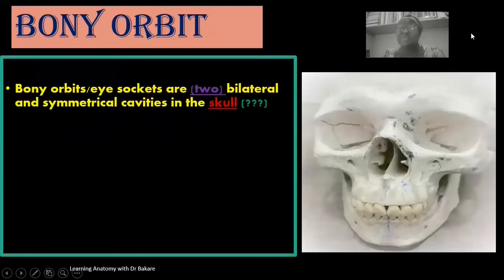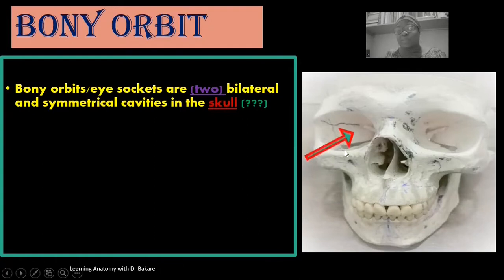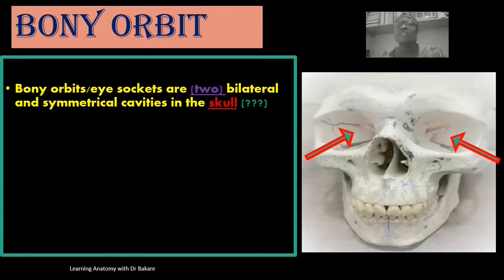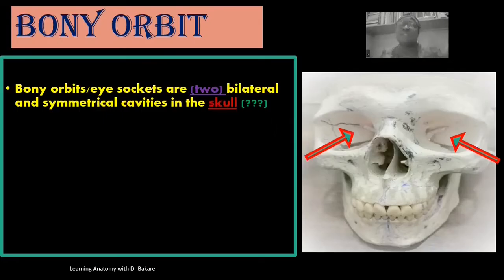The bony orbit is also referred to as the eye socket. They are two in number and bilateral, meaning one is located on each side. Even though the bony orbit is located in the anterior part of the face, it is bordered by bones from both the neurocranium and also the viscerocranium, forming the structural components of the bony orbit.